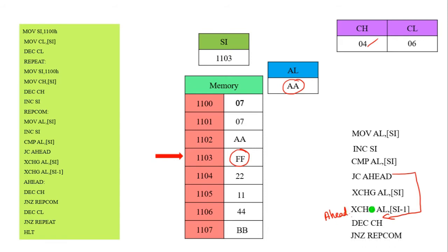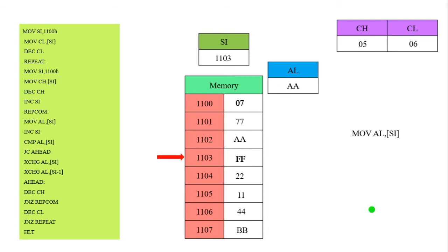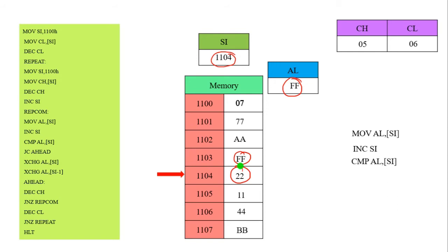Like that we continue. Next, MOV AL, [SI] — SI register contains 1103, which has value FF. This FF value is moved into the AL register. Then we increment SI, value becomes 1104, which contains 22. We compare FF with 22 — which one is smallest? 22 is the smallest. That's why we are going to exchange the data.